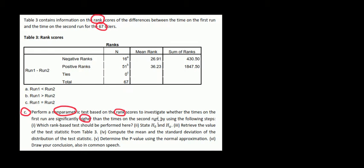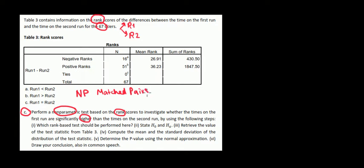So which test are we going to use? We're doing a non-parametric test — specifically a matched pairs non-parametric test, because we have 67 skiers who each have a first run and a second run. We also need it to use ranks, so it's a test with ranks. Because we're using ranks, we're going to use a Wilcoxon test.